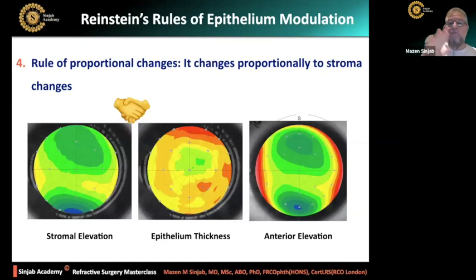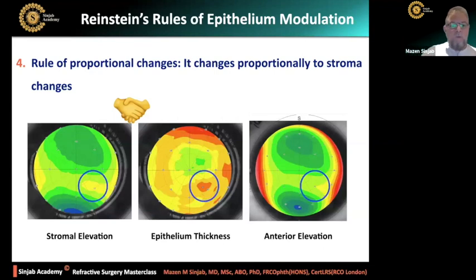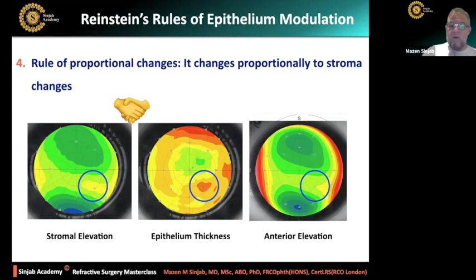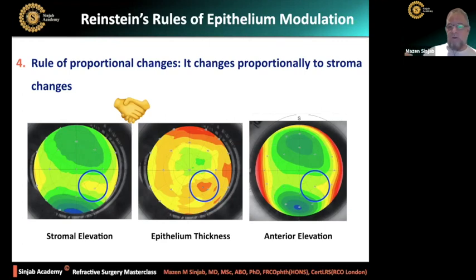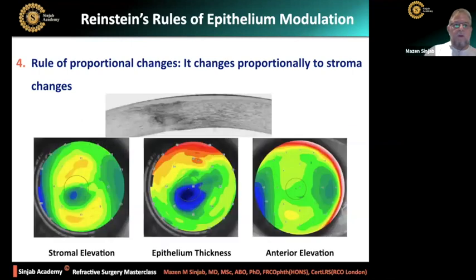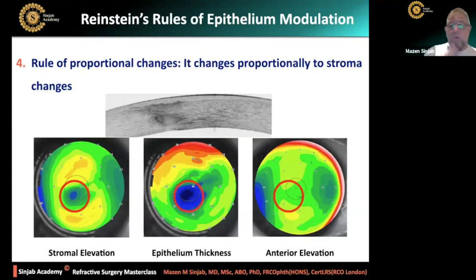Look at this area where the stroma bulges out — the corresponding area in the epithelium is thin in order to hide the irregularity of the stroma. Look at the anterior elevation — almost there is no irregularity. Compare the anterior elevation with the stromal elevation; the epithelium, because of the agreement with the stroma, thins over this protrusion in order to hide it. And similarly, a flat stroma with thick epithelium hides the stromal irregularity — the anterior elevation shows almost nothing.